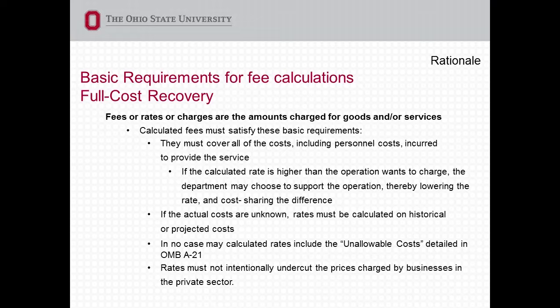If the actual costs are unknown, then you need to go based on your best guess or historical estimates. We talked about last time that if you don't know your anticipated usage because you're a new core, you have to kind of go out and see what customers are coming in — who do you think is going to use your services, are there large projects you know of? Try to use your best guess if you're looking at usage. Again, we go back to A21 or the Uniform Guidance — you can't include any unallowable costs like advertising, alcohol, equipment, those types of things. And rates must not intentionally undercut the prices of any business in the private sector.